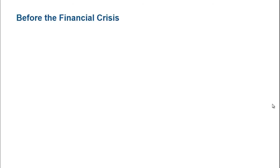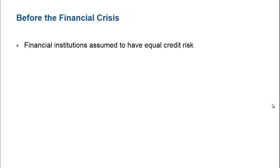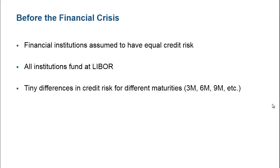Before the 2008 financial crisis, it was assumed that financial institutions participating in the interbank market had equal credit risk, that all such institutions could fund themselves at LIBOR, and that there were minimal differences in credit risk for different lending maturities.